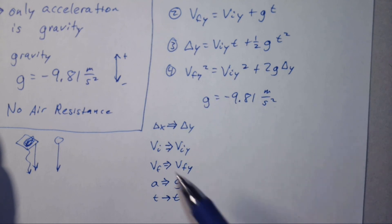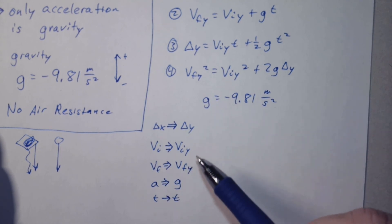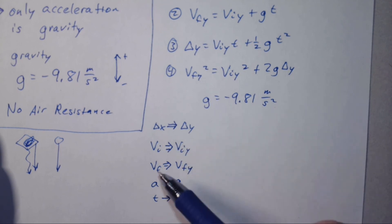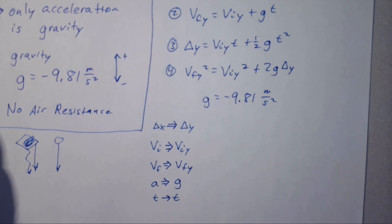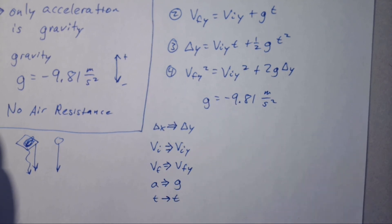Every time we had vi, we now denote it as viy because of the y direction. Initial velocity vi becomes viy. Final velocity vf becomes vfy. A becomes g, and t doesn't have a direction, so t is still t.